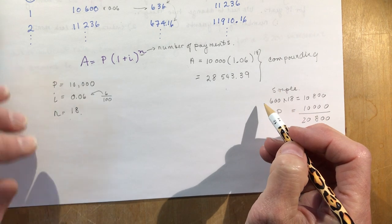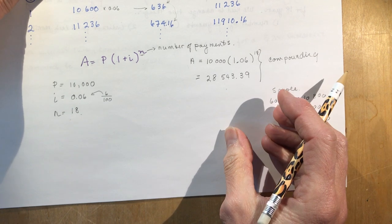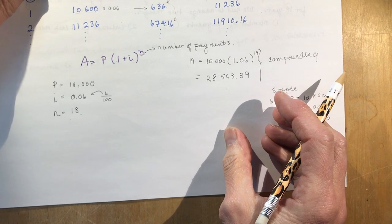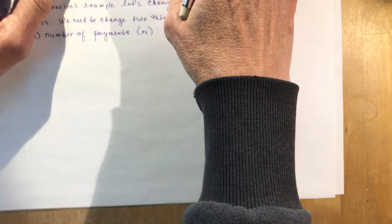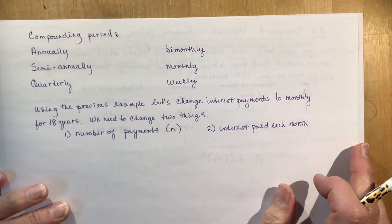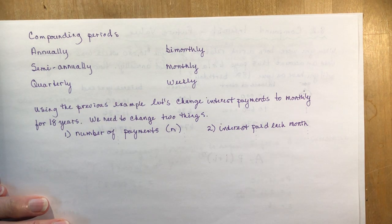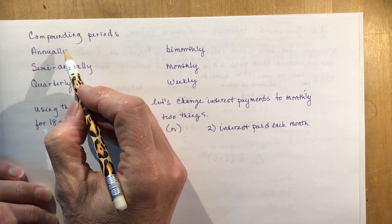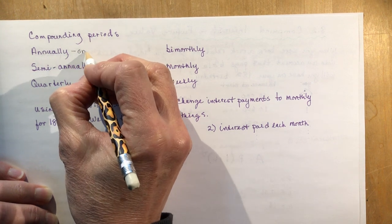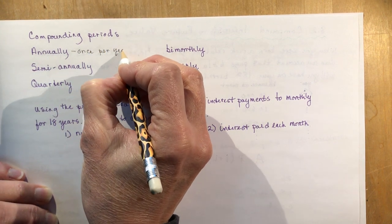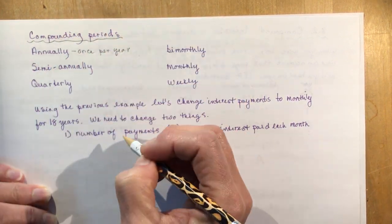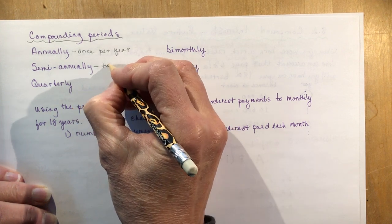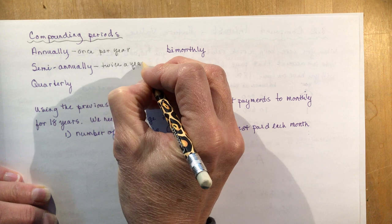It's really important that when you're investing money, you're getting a compound interest rate. We're going to show how that changes depending on the term — the compounding period, meaning how many times do you get paid in a year. Annually: you get paid once a year. Semi-annually: twice a year. You need to know these really well.